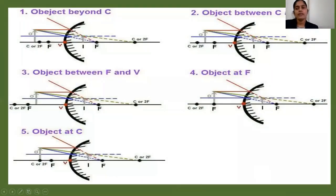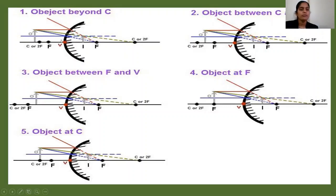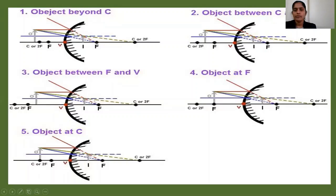Similarly, we can see image formation by a convex mirror when the object is placed at different positions. When the object is beyond C, the image is between f and the pole. When the object is between C and f, the image is also between f and the pole. From all these ray diagrams, we conclude that the image from a convex mirror is always diminished and virtual.